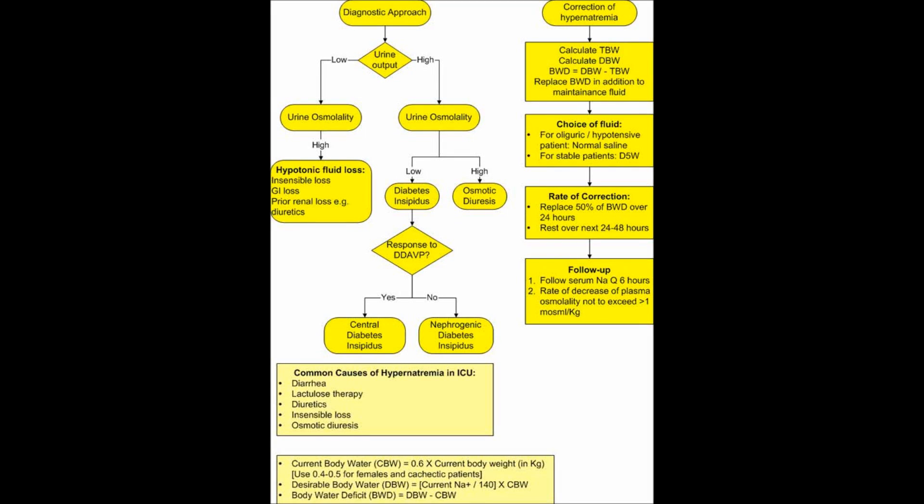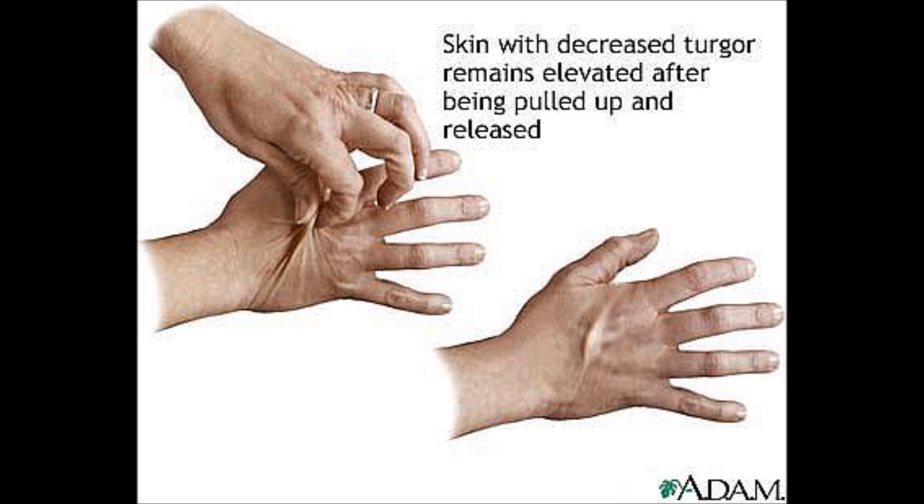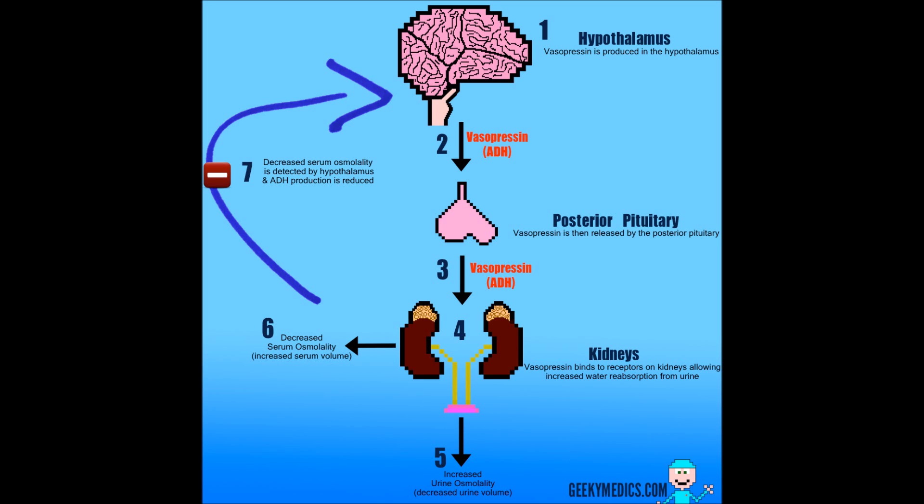What is hypernatremia? A sodium level of more than 145 is hypernatremia. What are the causes of hypernatremia? If you have water loss that is greater than sodium loss, we can call that hypernatremia. For example, dehydration and diabetes insipidus.